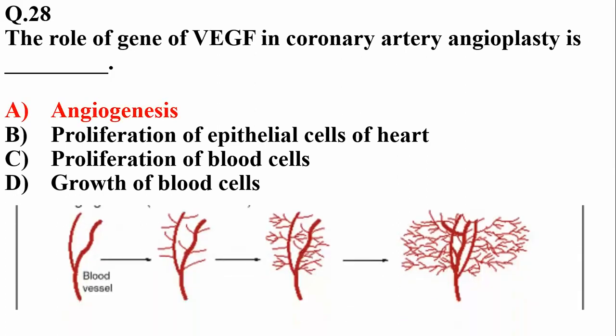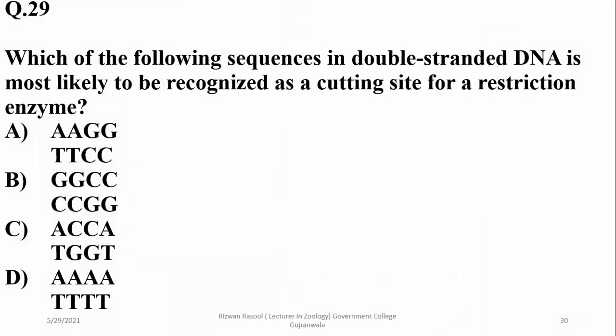Angiogenesis refers to the sprouting or development of blood vessels from existing endothelial cells, especially blood capillaries. Which of the following sequences in double-stranded DNA is most likely to be recognized as a cutting site for a restriction enzyme? It must be a palindromic sequence, that is beta; the other sequences in the list are not palindromic.